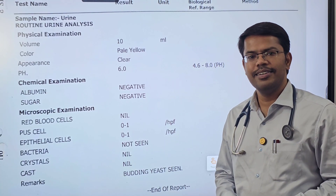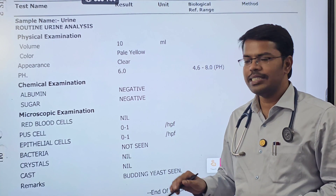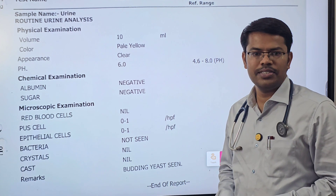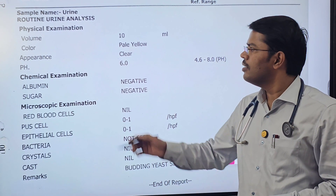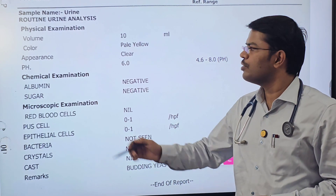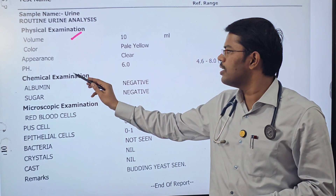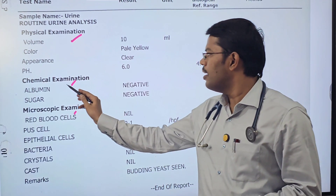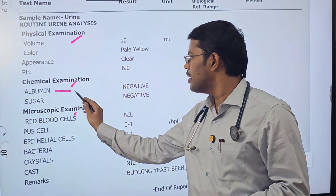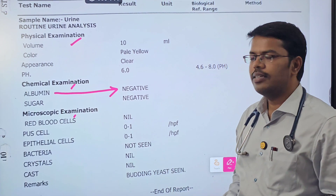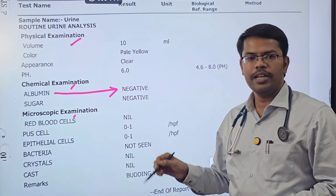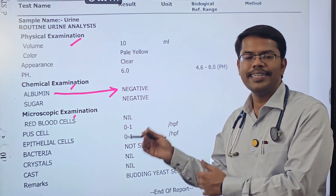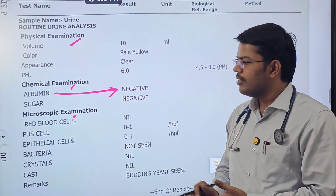Today we will see regarding one basic urine investigation that you commonly come across. In routine urine analysis, there are three columns: physical examination, chemical examination, and microscopic examination. Under the microscopic examination comes urine albumin, so how to interpret this and what it indicates.